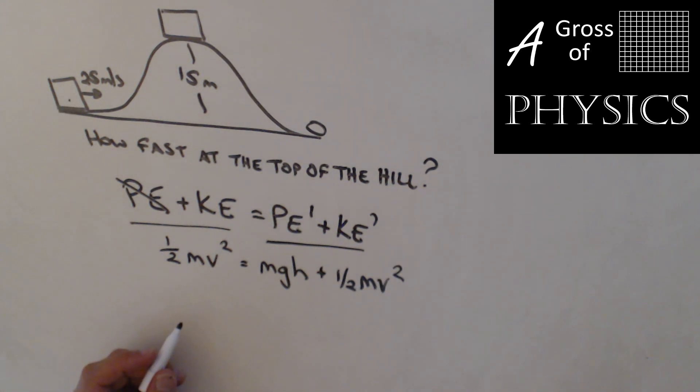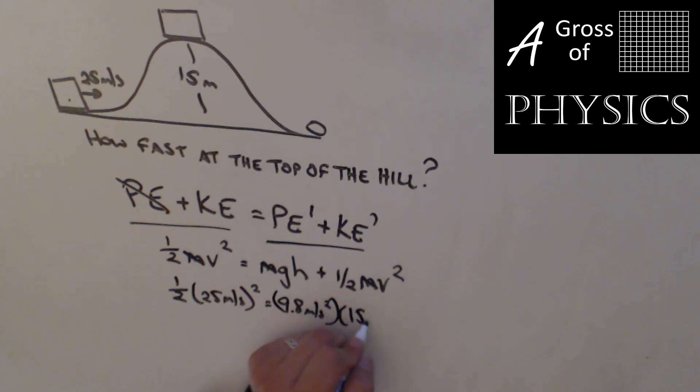I don't know the mass of the object. That's why it's not in the box there. So the masses cancel out though, so we're safe. So one-half, 25 meters per second, the whole quantity squared equals 9.8 times the height, which is 15 meters, plus one-half v squared. So I'm going to do 0.5 times 25 squared. I'm going to subtract from that parentheses 9.8 times 15. I get 165.5. I'm going to divide by a half, 331, and then take the square root. And my speed at the top is 18.2 meters per second.